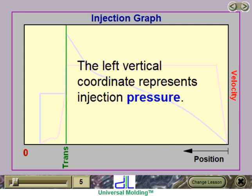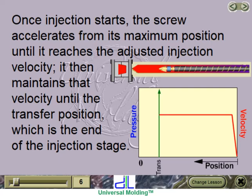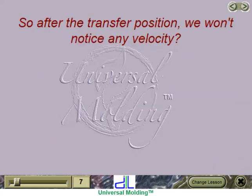The right vertical coordinate represents the speed or velocity of injection. The left vertical coordinate represents injection pressure. Once injection starts, the screw accelerates from its maximum position until it reaches the adjusted injection velocity. It then maintains that velocity until the transfer position, which is the end of the injection stage. After the transfer position, we won't notice any velocity.